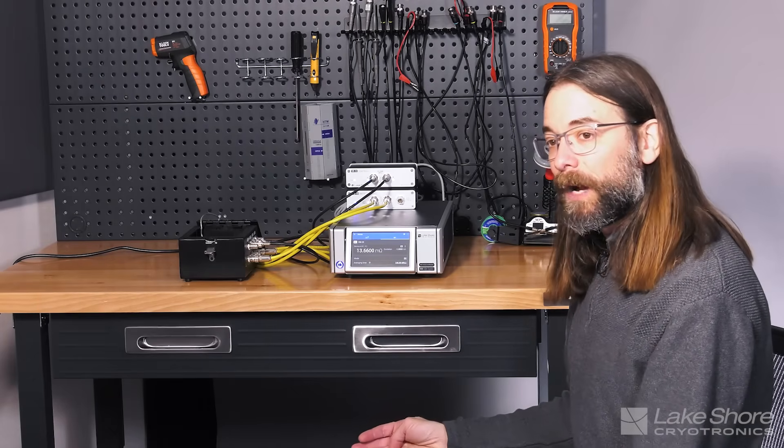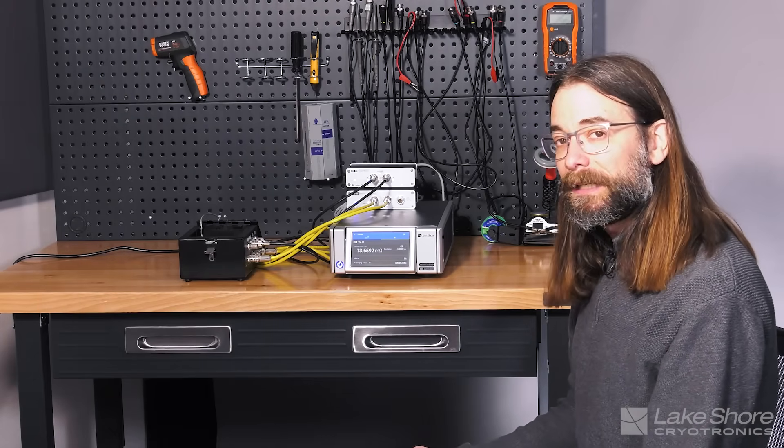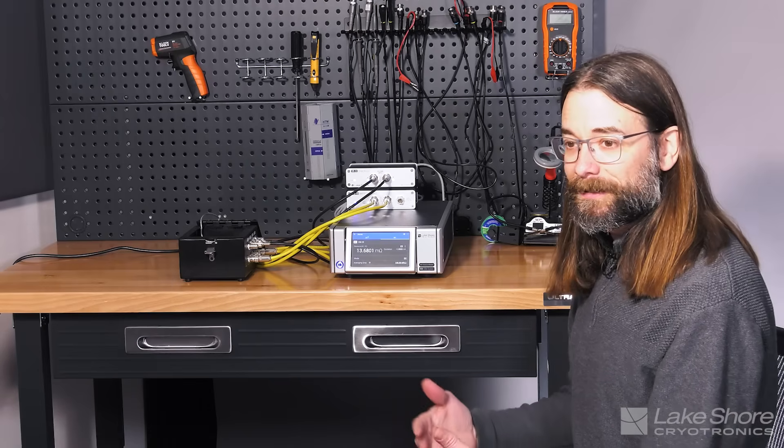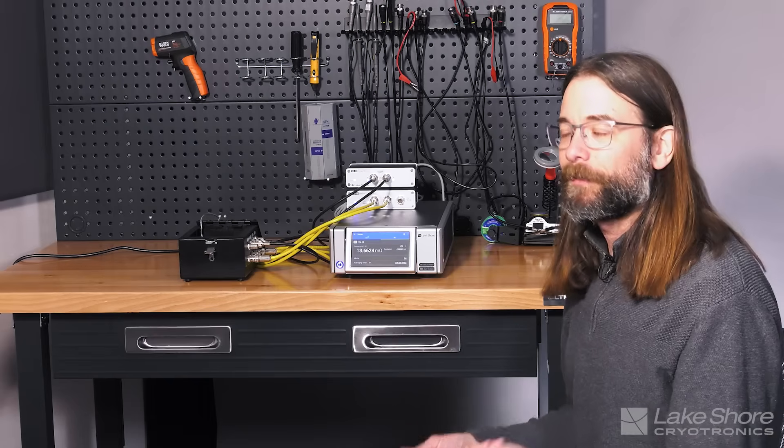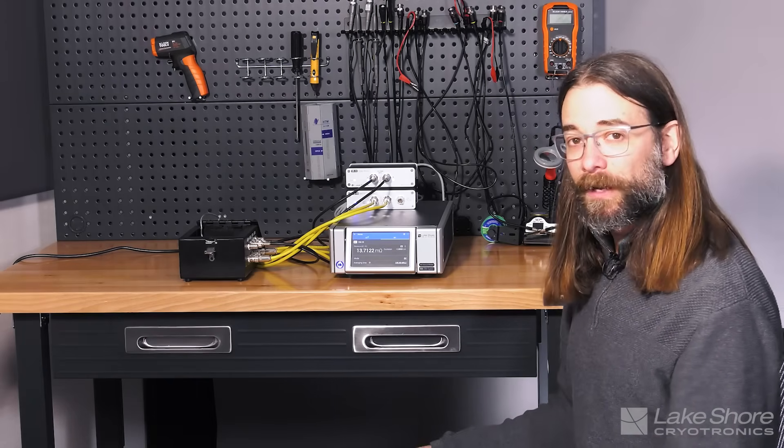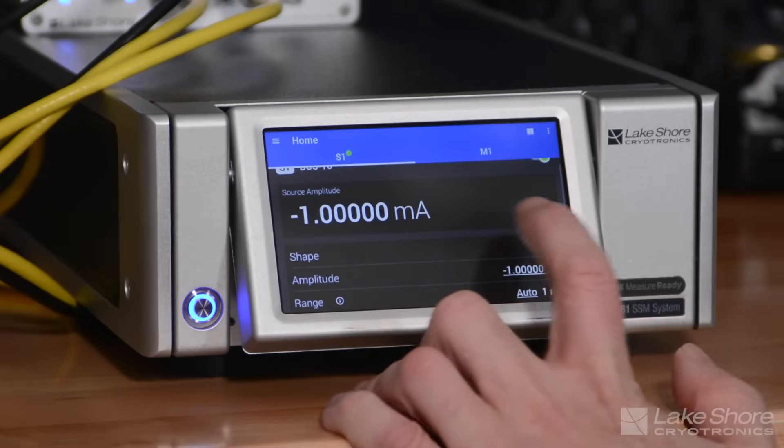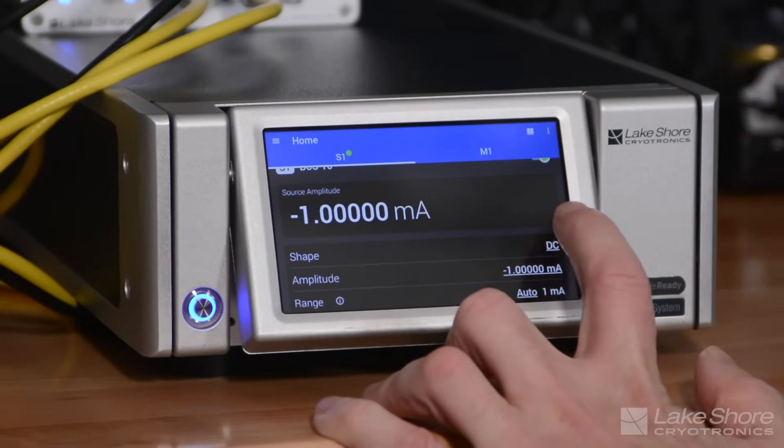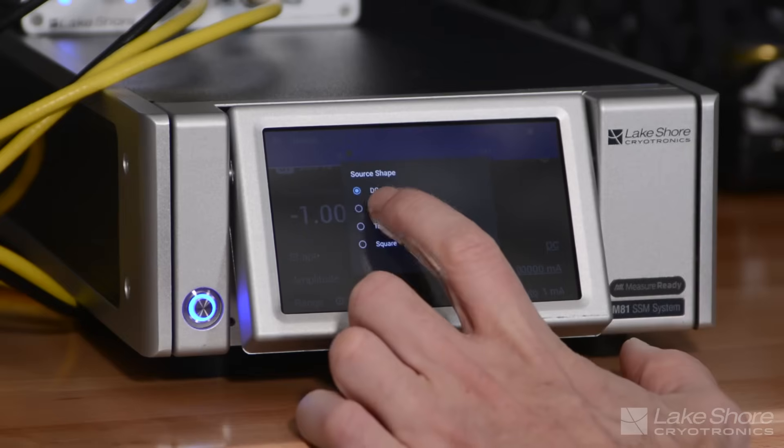One really convenient way of getting around this is to use a lock-in technique. With a lock-in technique, the offsets don't have as much of an effect on the actual measurement. And I can show you that really quickly. Just going to go over to the M81 to the source. We're going to change its shape to sine.